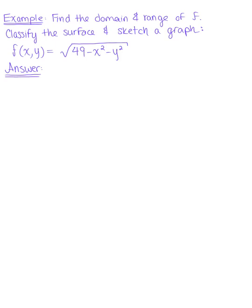Find the domain and range of F. Classify the surface and sketch a graph. We are given F(x,y) equals the square root of 49 minus x² minus y².